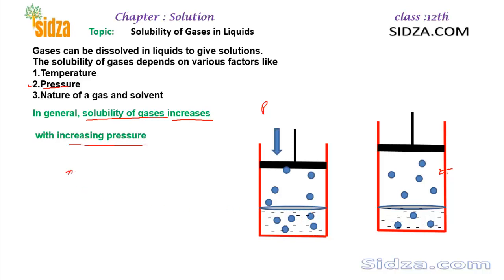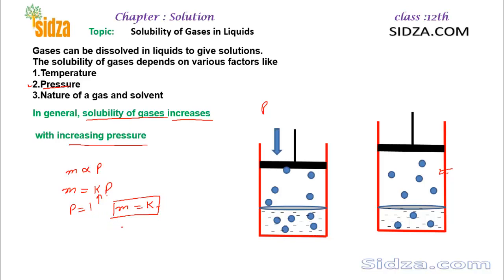Mathematically, we can write it like this: the mass, or solubility, of the gas is directly proportional to the pressure of the gas above the surface of the liquid, where m is the mass of the gas dissolved per unit volume of the solvent and p is the pressure of the gas above the surface of the liquid. So I can write it as m = kp. If the pressure is one atmosphere, then m will be equal to k. This constant k gives us the magnitude of the gas dissolved in the liquid at one atmospheric pressure.